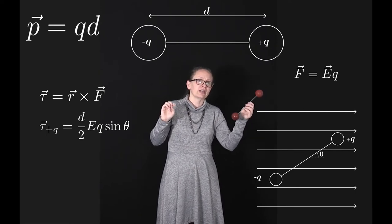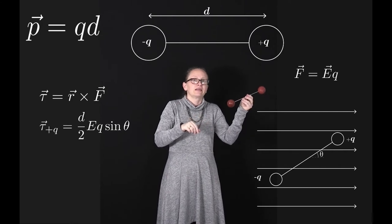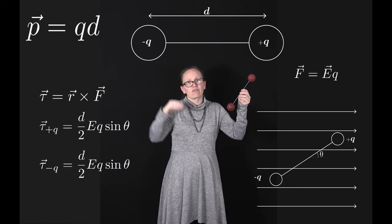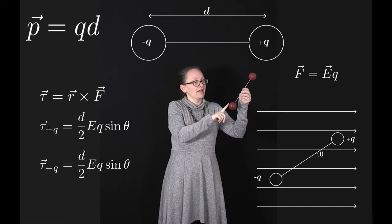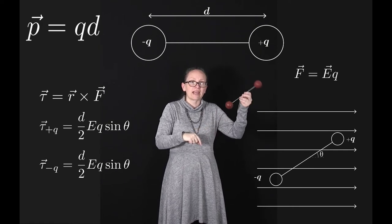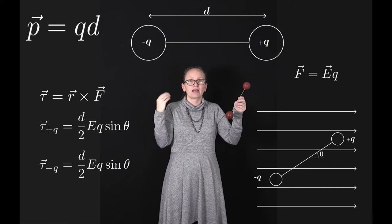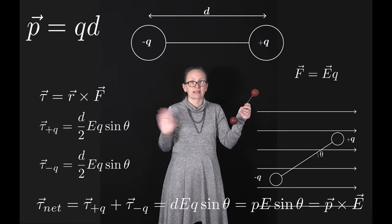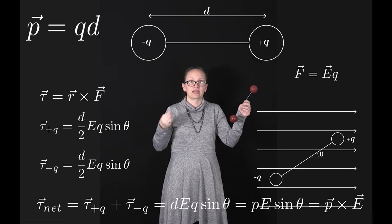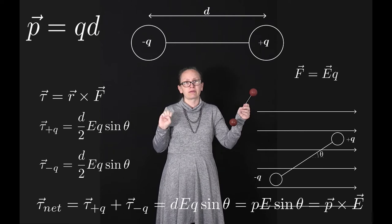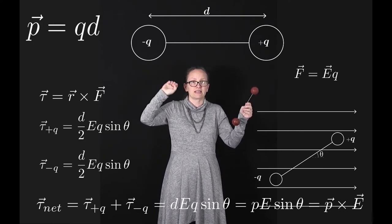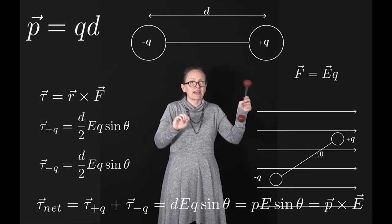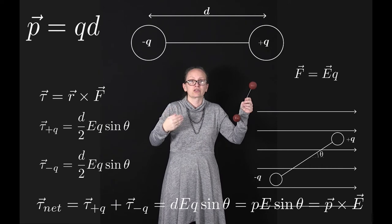That torque makes the dipole turn in a clockwise direction. The torque on the negative particle is also (d/2)eQ sinθ and also acts in the same clockwise direction. So the net torque equals the sum of both contributions, giving deQ sinθ. Written as a vector equation, and recognizing that the dipole moment is p = dq, this becomes τ = p × E, directed into the screen for clockwise rotation.